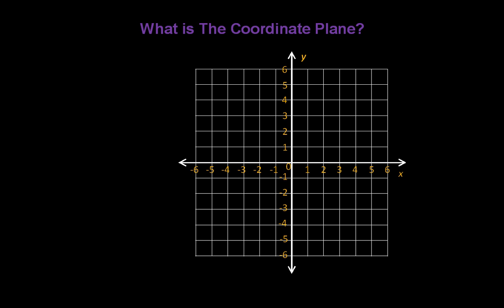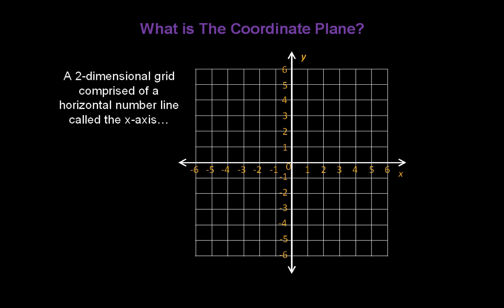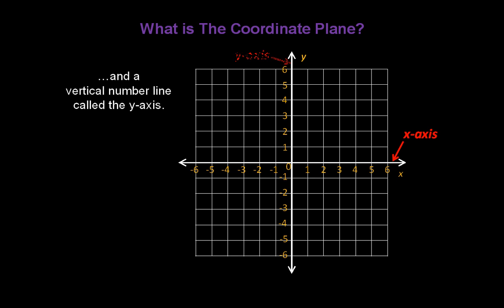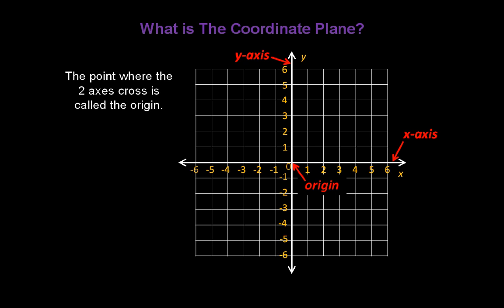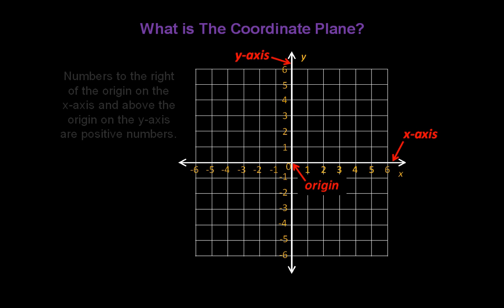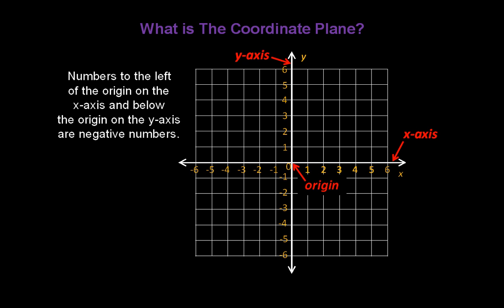What is the coordinate plane? It's a two-dimensional grid comprised of a horizontal number line called the x-axis and a vertical number line called the y-axis. The point where the two axes cross is called the origin. Numbers to the right of the origin on the x-axis and above the origin on the y-axis are positive numbers. Numbers to the left and below the origin are negative numbers.